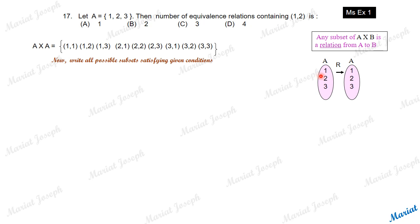What is A cross A? A cross A is the set of all possible ordered pairs made using these three numbers. They are: (1,1), (1,2), (1,3), (2,2), (2,3), (3,1), (3,2), (3,3) — nine possible outcomes. This is the Cartesian product A cross A.